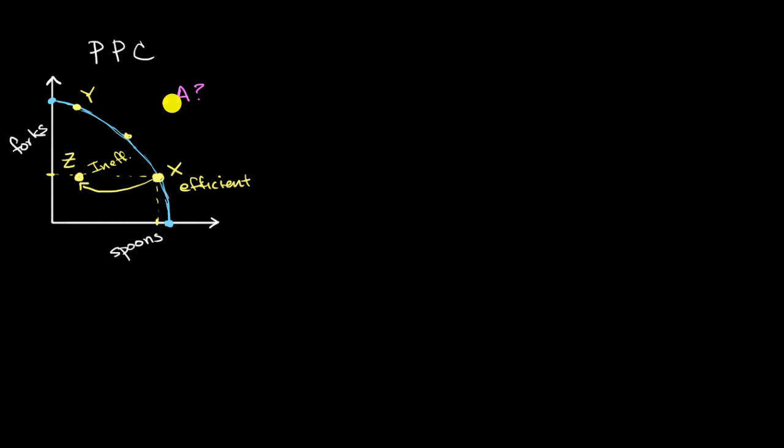But let's say you really want to reach it, how can that happen? Well, you can actually have investment, or you could have more land, or more labor. So let's think about that scenario. That's my fork axis, that's the quantity of forks that Utenslandia will produce in the year. This will be the spoon axis. And let's draw our original production possibilities curve.